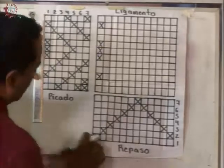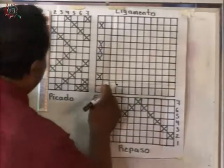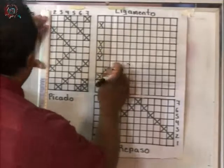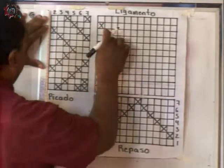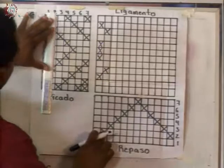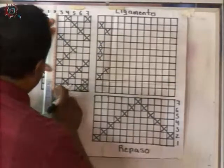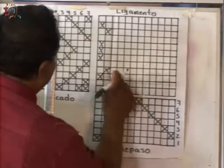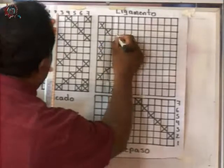Sigo con el siguiente: el dos. Aquí tengo el dos. Dejo tres, tomo uno, dejo cinco, y tomo uno. Ahí ya hice el número dos. Después el tres: tomo uno, dejo tres, tomo uno, dejo tres y tomo uno.